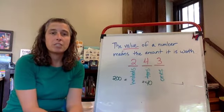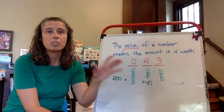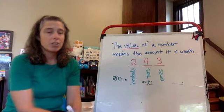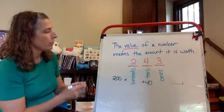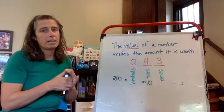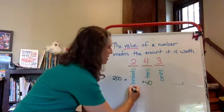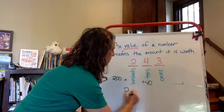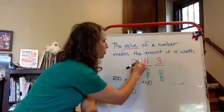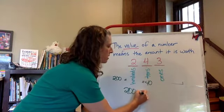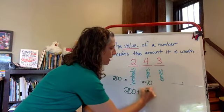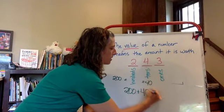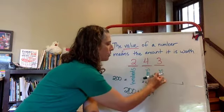Expanded form is when the digits of a number are written out with just their values added together. So if I have this number right here, 243, if I wanted to write it in expanded form it would look like this. It would look like 200 because that's the value of the two in the hundreds place, plus four in the tens place so that would be 40, plus three in the ones place.